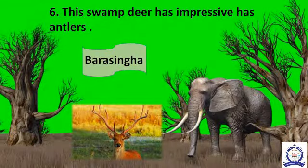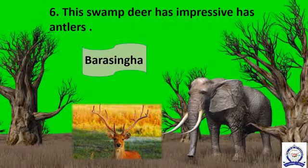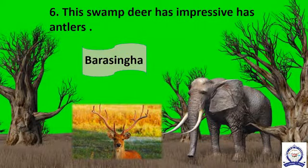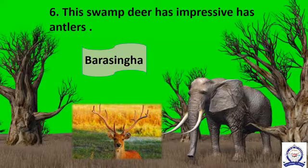The sixth question: this swamp deer has impressive antlers. It derives its name from the number of tines — tines means prongs — commonly found on its antlers. This deer's name is Barasingha.